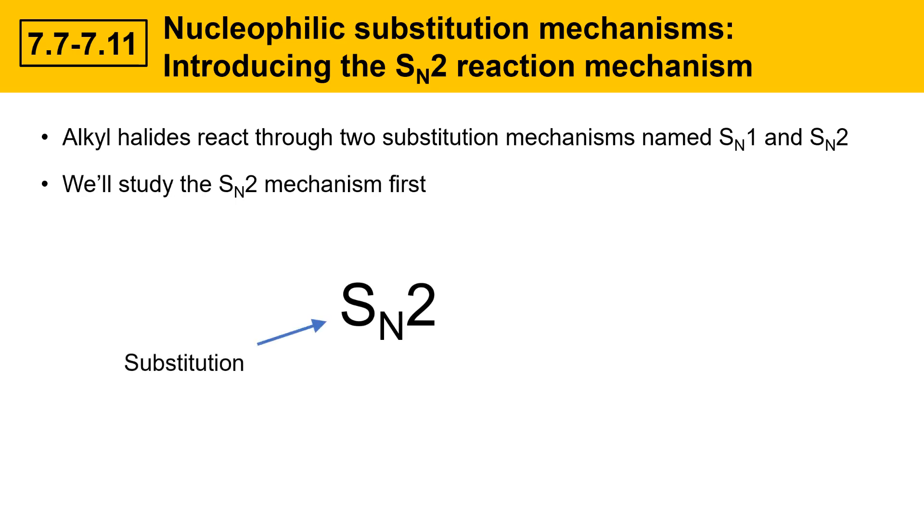The big capital S stands for substitution. That tells you it's a substitution type mechanism. The subscript N stands for nucleophilic. That means it's going to be a nucleophile that's doing the substituting. It's going to take the place of the leaving group.